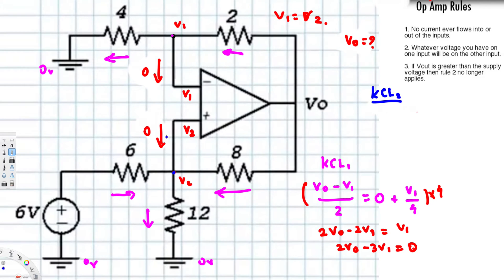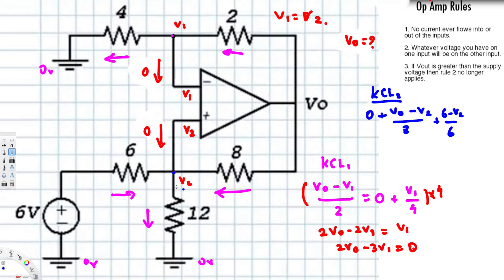For KCL at node 2: whatever current enters must exit. The currents entering are zero, V-naught minus V2 over 8, and 6 minus V2 over 6. The exiting current is V2 minus zero over 12, which is just V2 over 12.